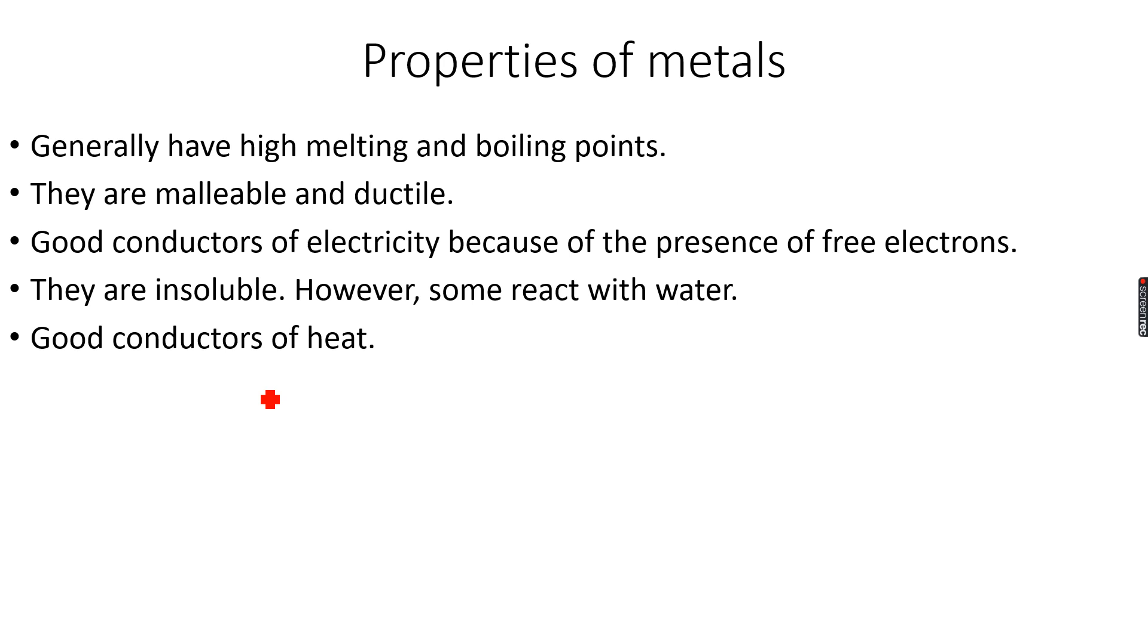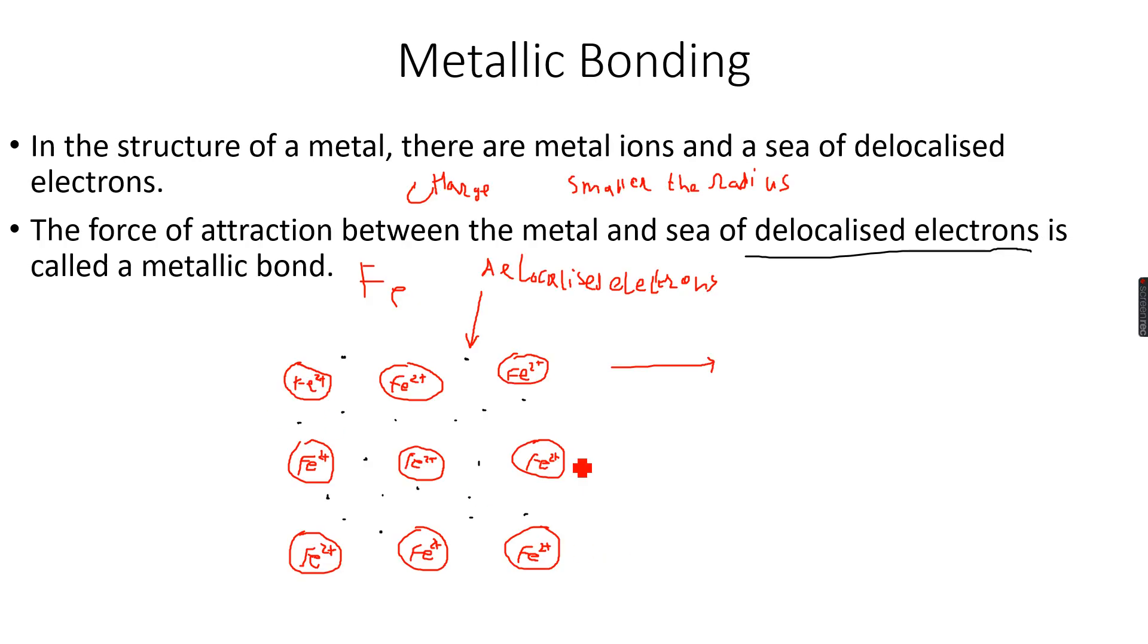Then metals are good conductors of heat. This is because when you heat a metal, these ions start vibrating very strongly, so there's a lot of conduction taking place. If you remember, conduction is when heat is directly transferred from one atom or one particle to the other.